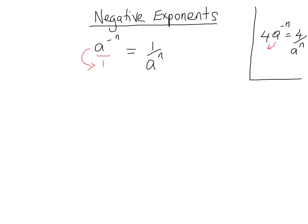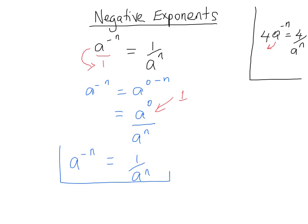But why does this work? If you want to see why, here's a quick explanation. If we have a to the negative n, that's actually the same thing as a to the 0 minus n. Using the laws of exponents, a to the 0 minus n is equal to a to the 0 over a to the n. And we know that anything to the power of 0 is 1, so this is equal to 1 over a to the n. Now we can see why a to the negative n is actually 1 over a to the n.